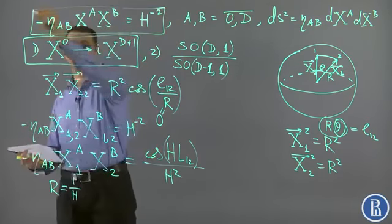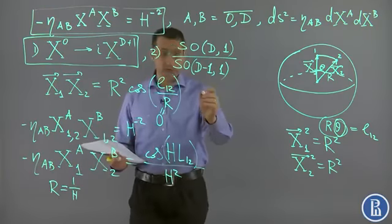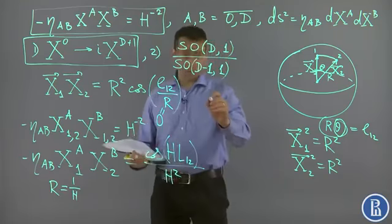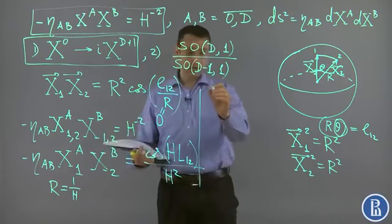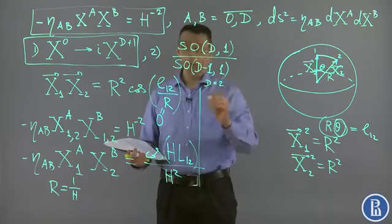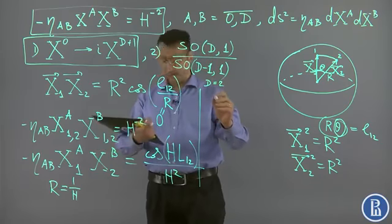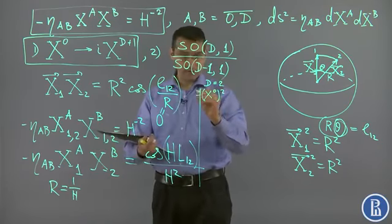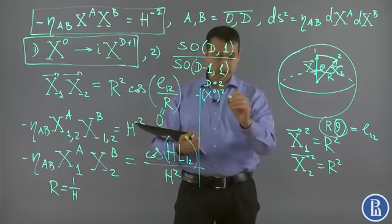The thing is obvious in this case. Now to see the fact that this is a hyperboloid, let me just draw it for the case when d equals 2. We have x0 squared with a minus sign plus x1 squared plus x2 squared.